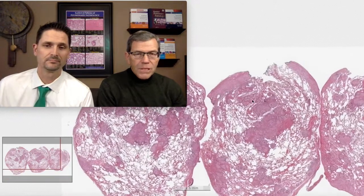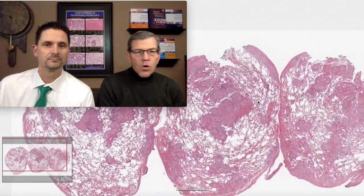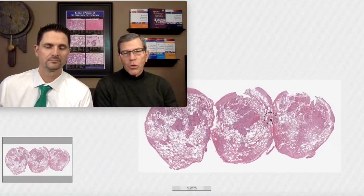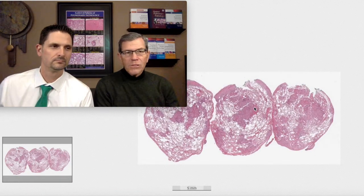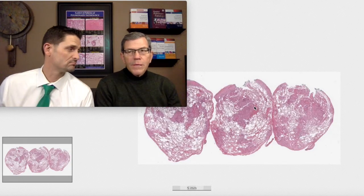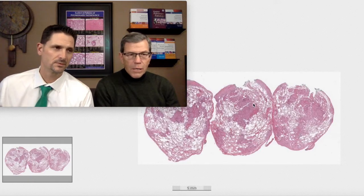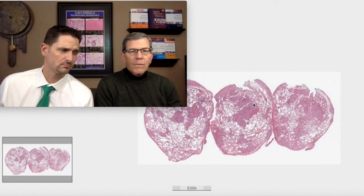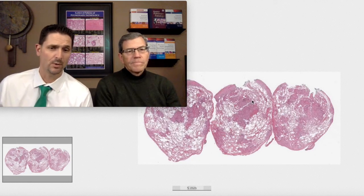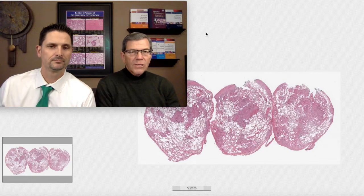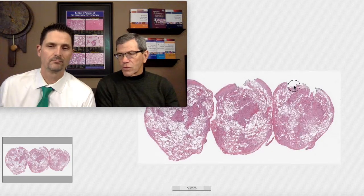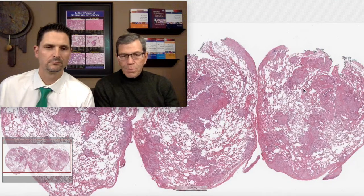This is a lung biopsy from a patient who is 42 years old and has had shortness of breath with cough for about six months — a subacute presentation, right on the edge of going to chronic. This is always concerning for pulmonologists because frequently they'll watch these patients evolve over two or three months and they're not getting better, they're getting worse.